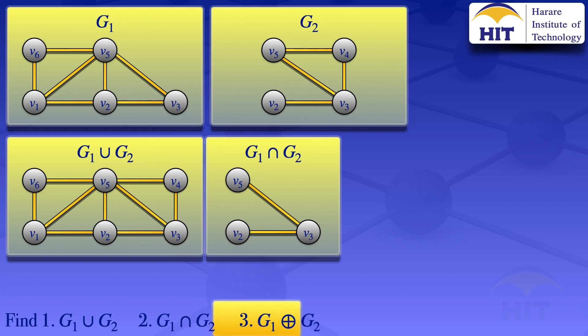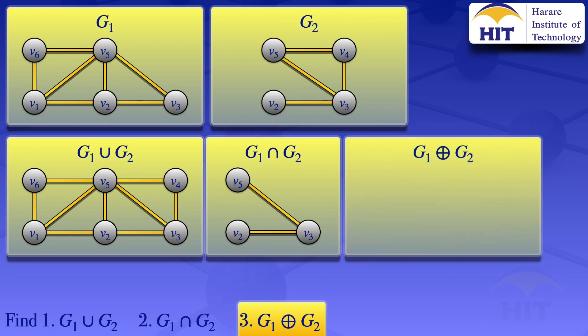I now move on to the next question — the ring sum of G1 and G2. When we are looking at the ring sum, what we do is we remove the intersection from the union. So from the union that we have, we remove the two edges that are in the intersection. When you remove those two edges which are in G1 intersection G2, we get the ring sum. For the ring sum, we look at the union, then remove the intersection.